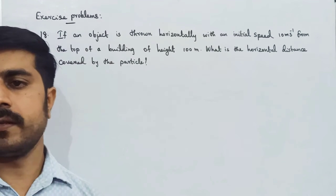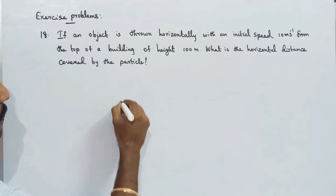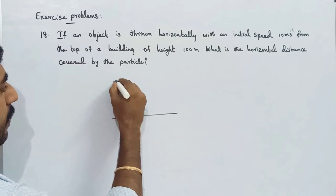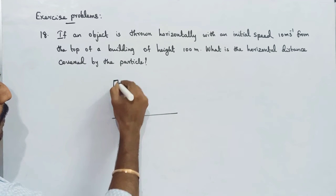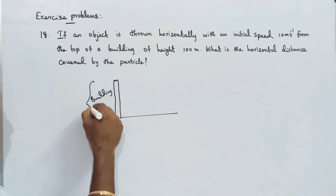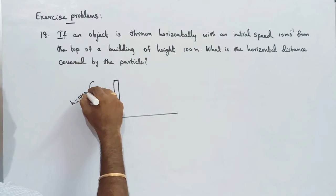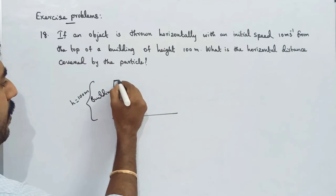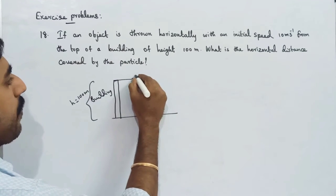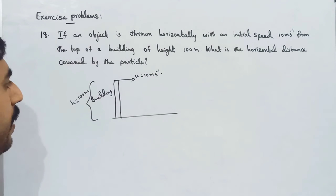In the top of a building, one object will be thrown. This is the surface. This is the building. The height H is equal to 100 meters. I'm going to throw this — here the initial horizontal speed U is equal to 10 m/s.